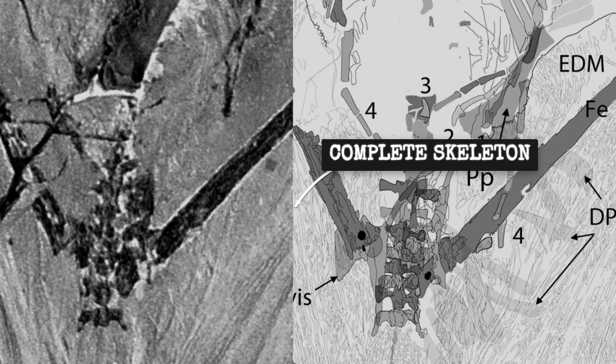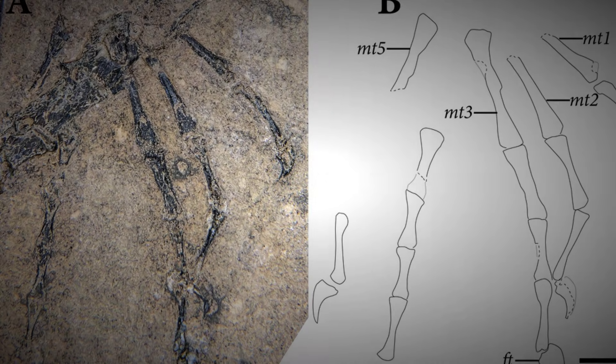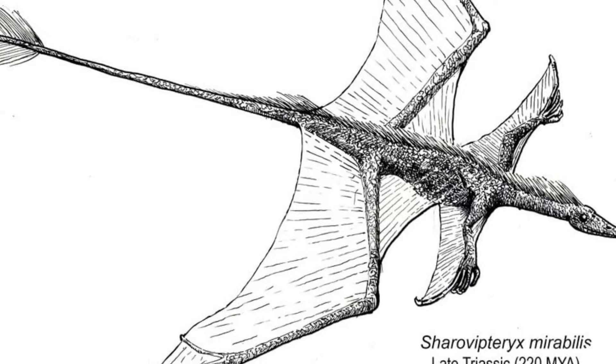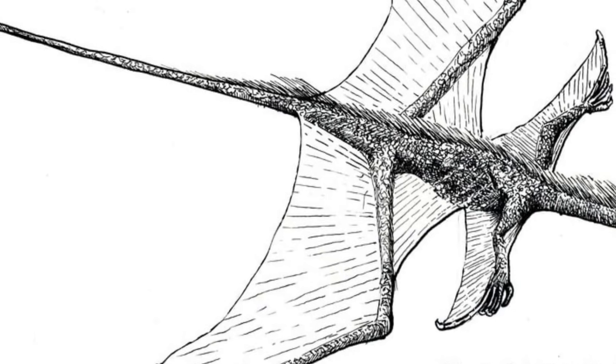Inside, a complete skeleton, dorsal view. Bones still articulated and stretching from the hind limbs to the tail. Impressions of a membrane. Not feathers, not scales. A flight membrane.